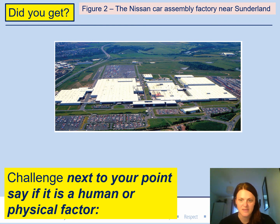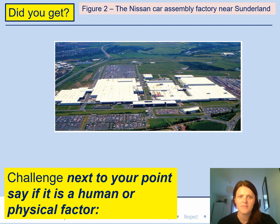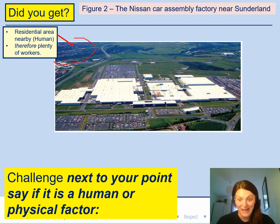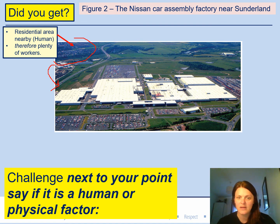We're going to have a look at some answers now, so hopefully you've written down three points explaining how this location is really good for a car assembly factory. Get your green pens out and we'll go through it. The first point — I circled this — lots of houses is what we call a residential area. If you're really close to where people live, you're going to get lots of people to come and work for you, because people like living near their work and don't really want to travel far. So that will attract lots of workers.